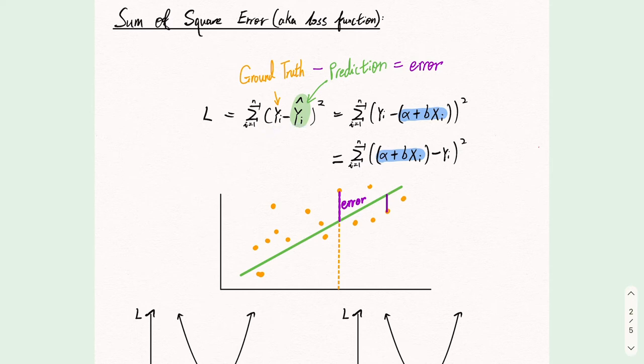Graphically, it is the length between the data points and our prediction. This is an error for one data point. To evaluate the performance of the line, we need to sum up the error of all the points. That is why we have summation sign. But why do we need to square the error?